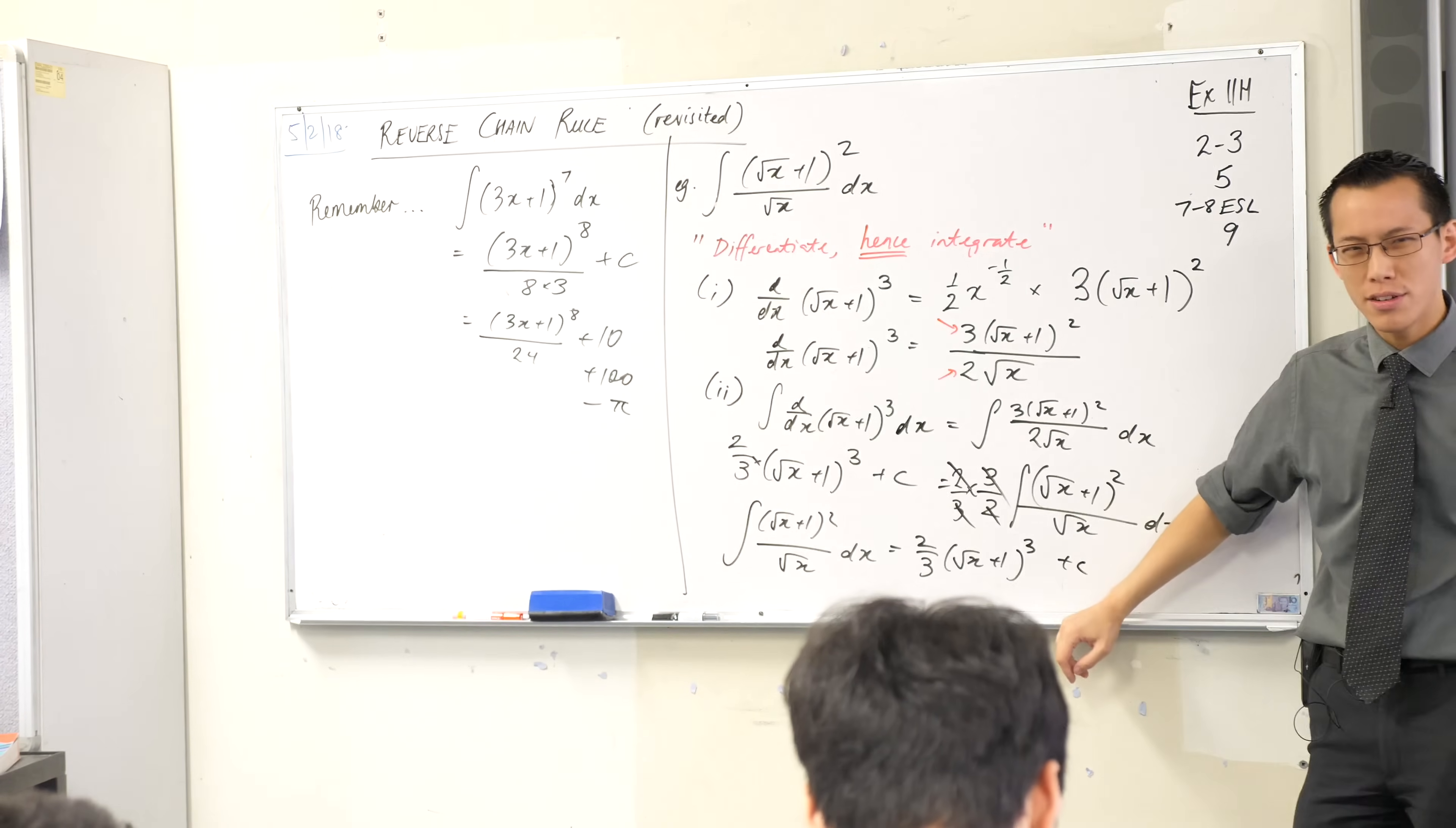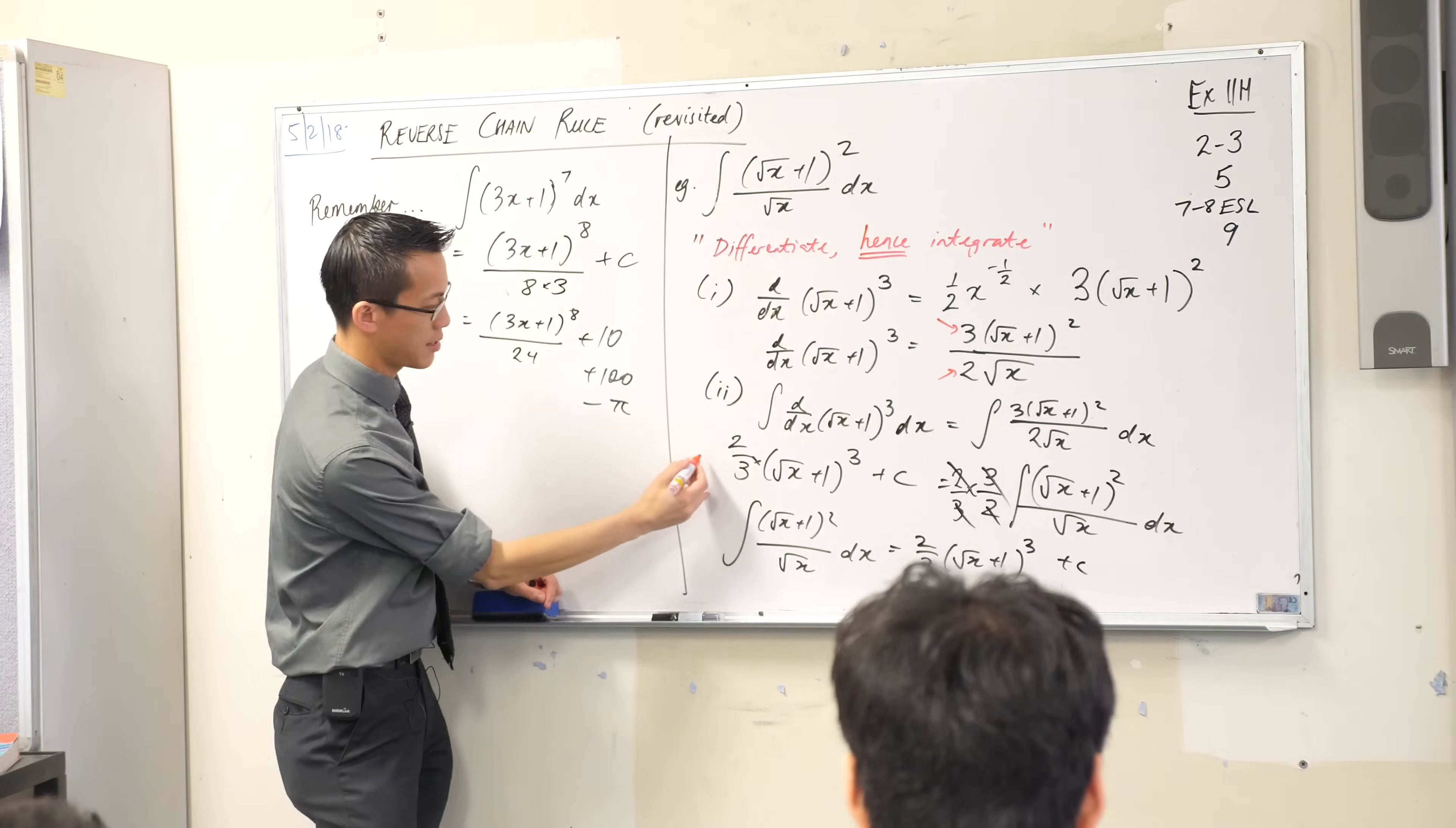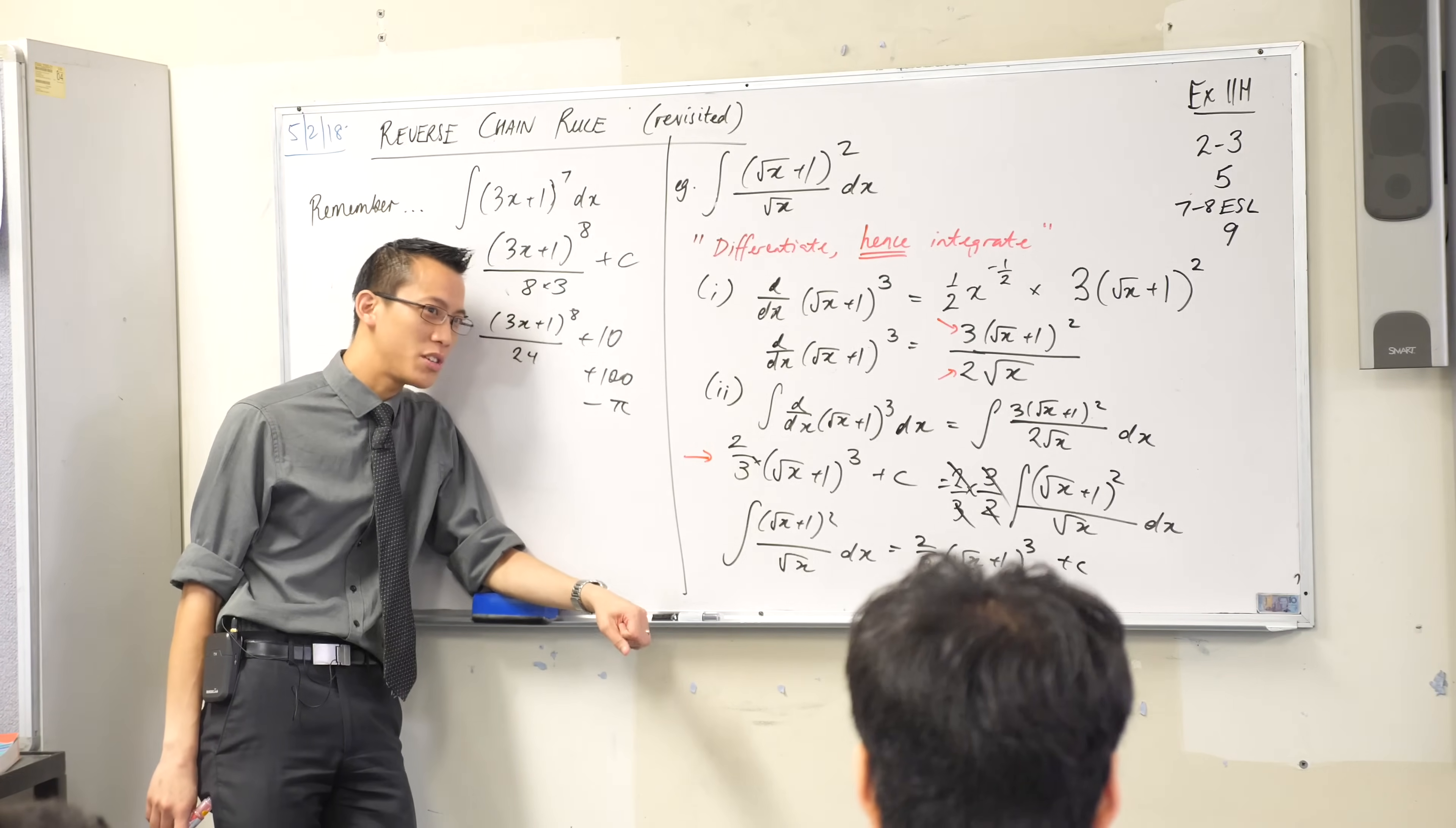Now, the astute among you should notice, I did something slightly dodgy. It's okay. I'm going to justify why. In fact, maybe you can justify why it's okay. But I wonder if anyone spotted it. It was on this line. This one here. Something was slightly off. There's a reason why it's okay. But can you work out what's going on? Michael, what do you say?